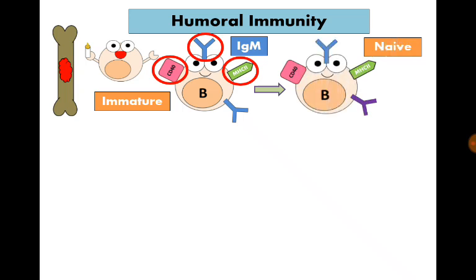They complete their maturation in bone marrow and become mature B-lymphocytes carrying immunoglobulin D as receptors on their surfaces, however they are still naive.